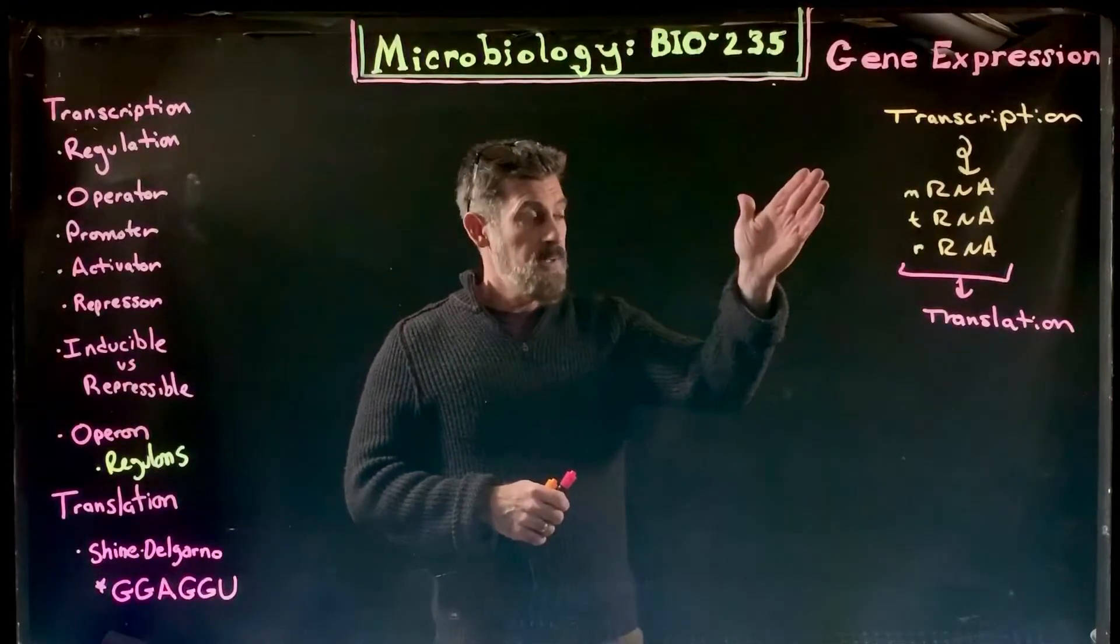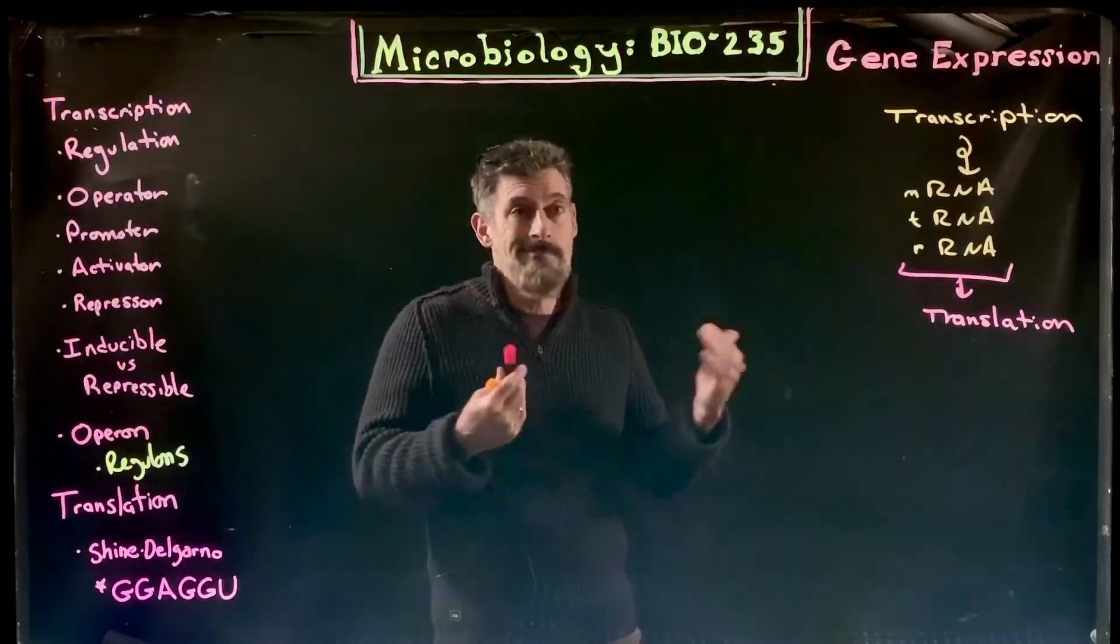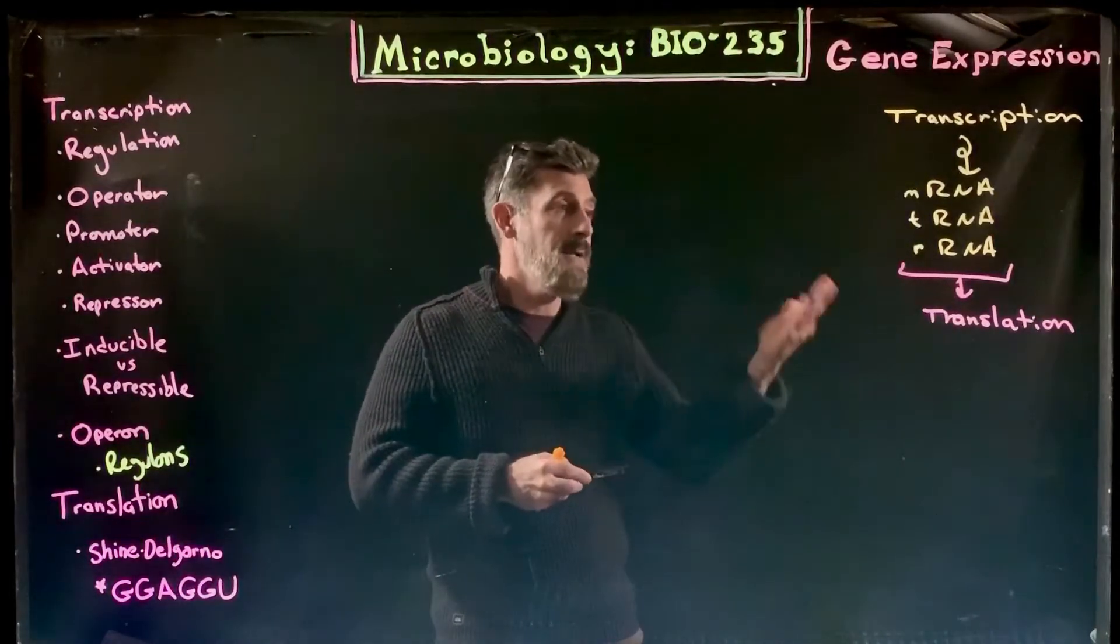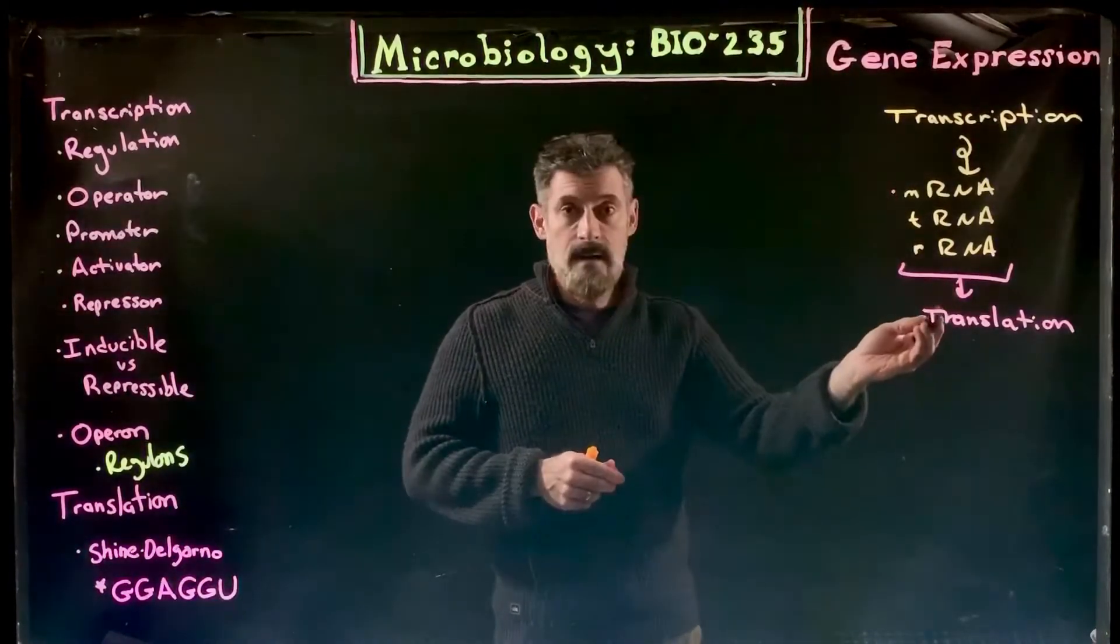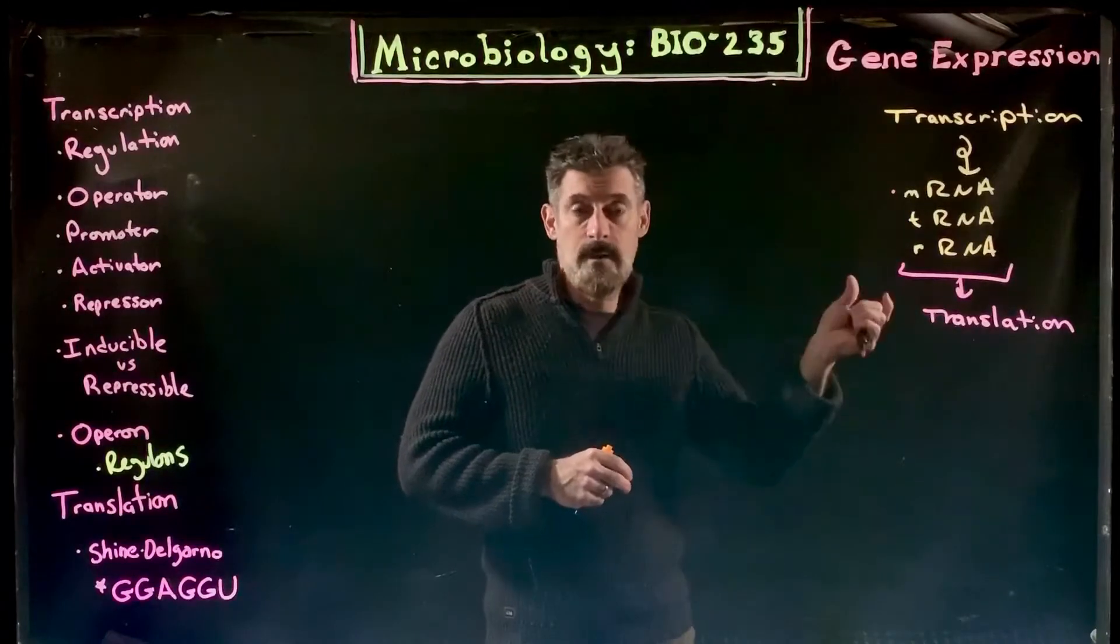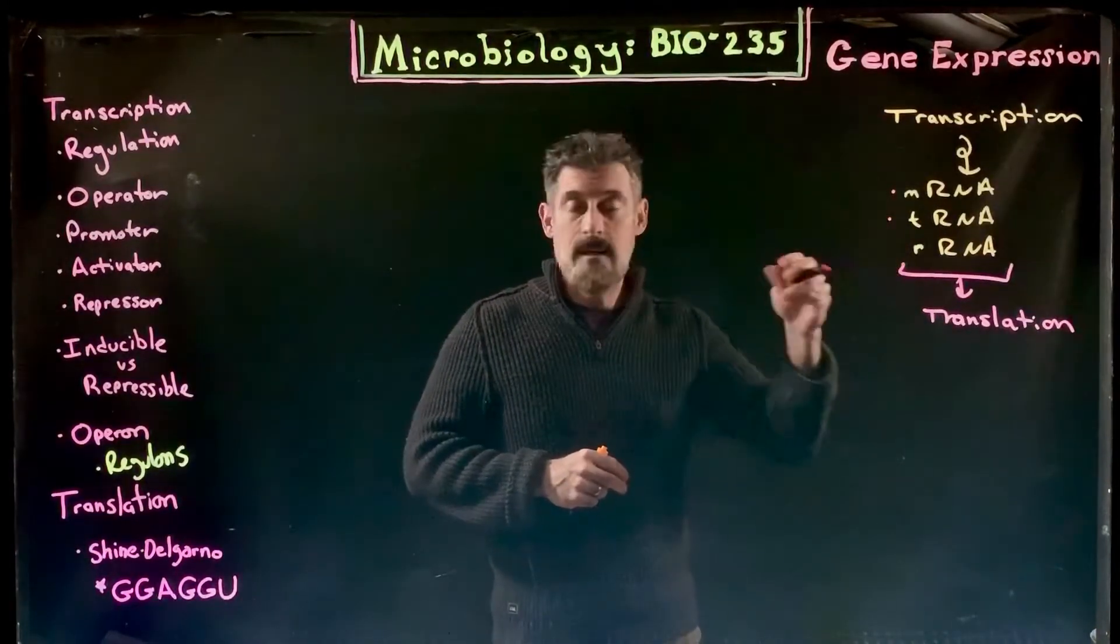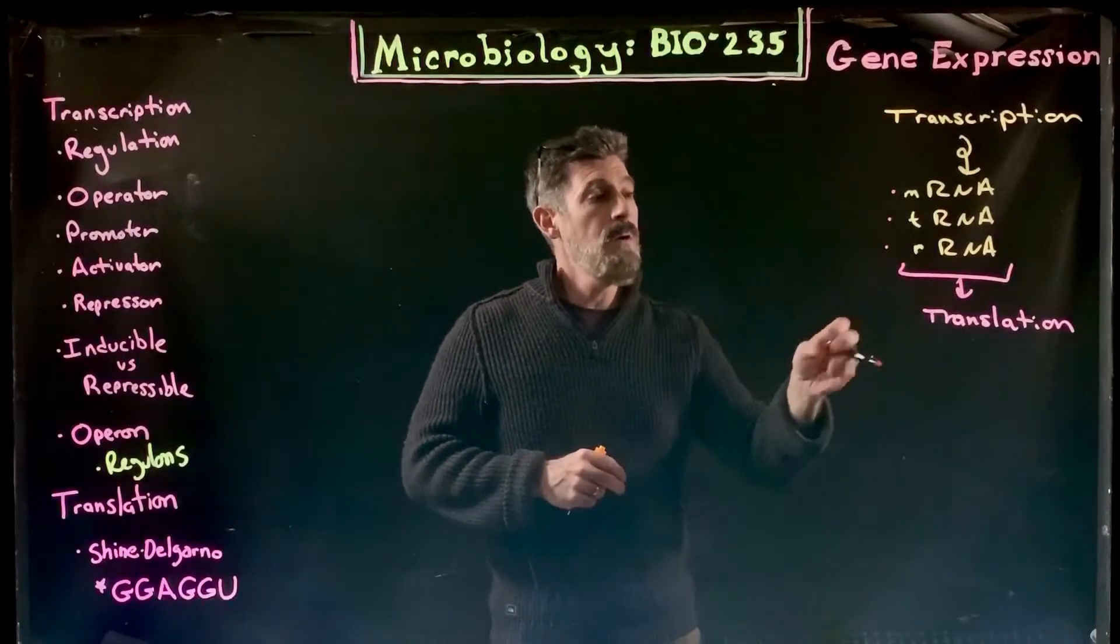After transcription has occurred and you've made RNA, you haven't just made any type of RNA. Typically you've made a specific type of RNA: either messenger RNA that's going to contain the nucleotide sequence that will code for amino acids, transfer RNA that will be used to carry specific amino acids, or ribosomal RNA.